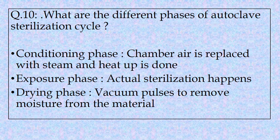Question number ten: What are the different phases of the autoclave sterilization cycle? Basically there are three phases: the conditioning phase, the exposure phase, and the drying phase. In the conditioning phase, chamber air is replaced with steam and it heats up to the sterilization temperature of 121°C. The exposure phase is where actual sterilization happens. The drying phase uses vacuum pulses to remove moisture from the material.